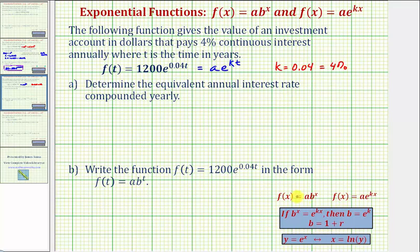If we want these two exponential functions to be equivalent or equal, notice how this would indicate that b^x would have to equal e raised to the power of kx. So if b^x equals e^(kx), then it follows that the base b must equal e^k.